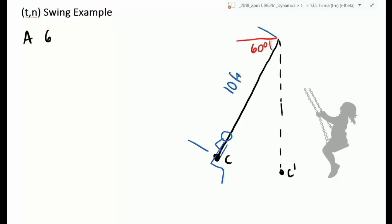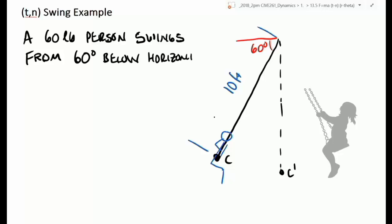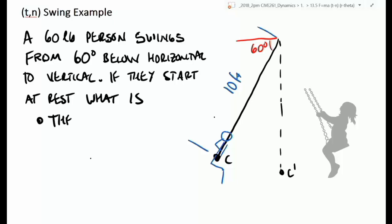We'll say that a 60-pound person swings from 60 degrees below horizontal to vertical. If they start at rest, what is their final speed and the tension in each rope?